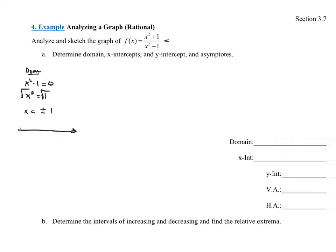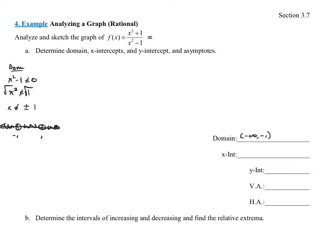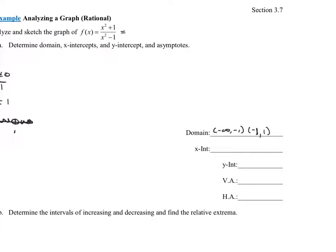That means x cannot equal those numbers. So x equals negative 1 and x equals 1 are both open circles, and the function is defined everywhere else. The domain is the interval negative infinity to negative 1, then negative 1 to 1, and then 1 to infinity.